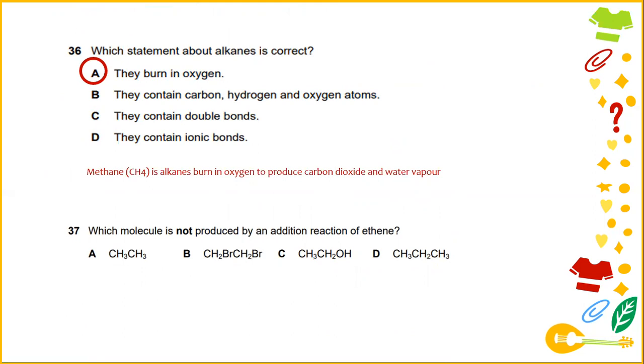Which molecule is not produced by an addition reaction of ethene? Bromine loses its original red-brown color to give a colorless liquid. In the case of the reactions with ethene, dibromoethane is formed. The answer for this would be CH3CH2CH3.